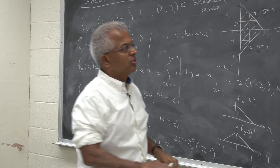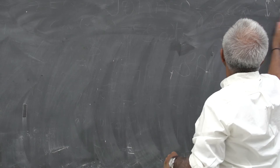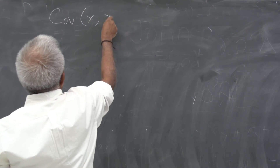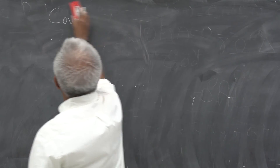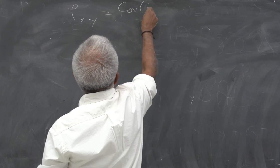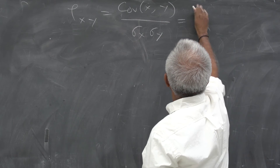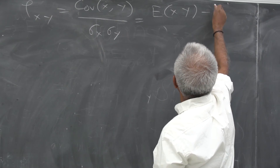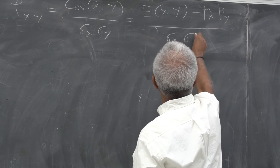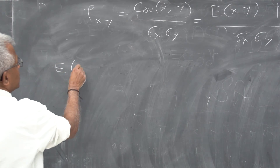Let's check the correlation coefficient. The correlation coefficient ρ_{XY} equals the covariance of X, Y divided by σ_X · σ_Y, which equals E[XY] − μ_X · μ_Y all over σ_X · σ_Y. In this case, I can see that the expected value of Y is 0.